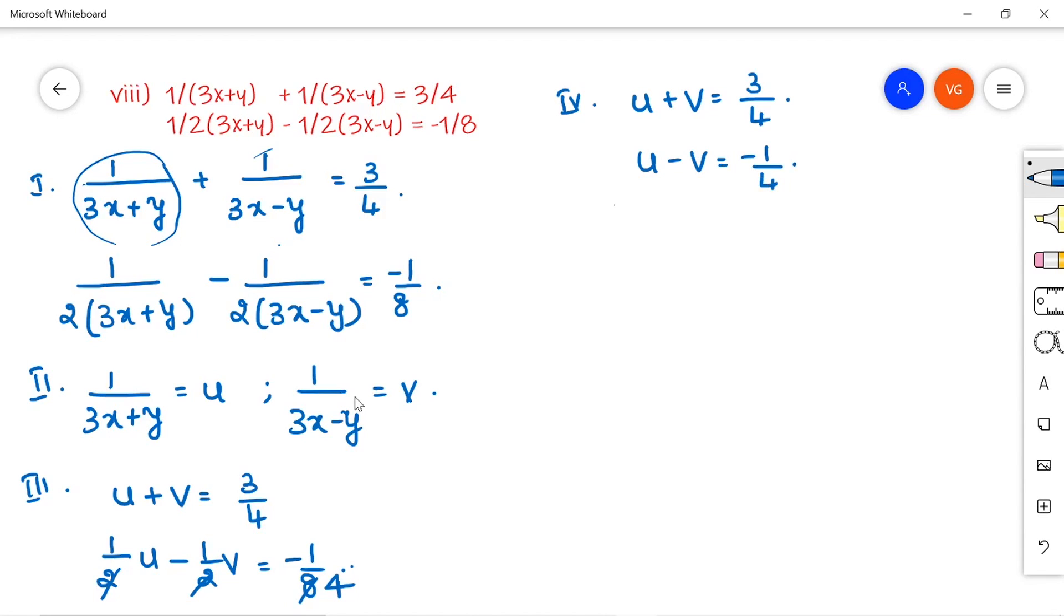We can solve this using elimination method, looking very simple. Just strike off. That is, you are eliminating one variable, that is v. So, 2u is equal to 3 by 4 minus 1 by 4, which is 1 by 2. So, u is equal to 1 by 4.